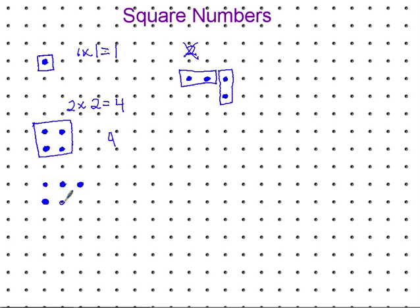Our next square that we could make, we had three rows in three columns. Three times three equals nine, so nine is a square number. So far we have one, we have four, we have nine. What do you think is going to be the next one?